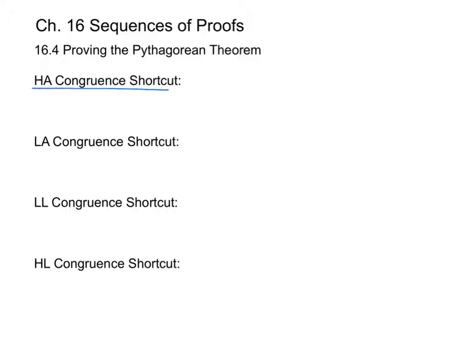So essentially if you have two right triangles and you're told that the hypotenuses are congruent and that the acute angles are also congruent, then you can say that the triangles are congruent.